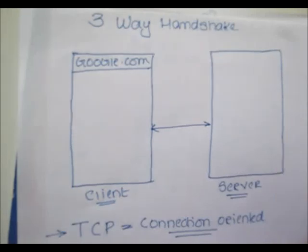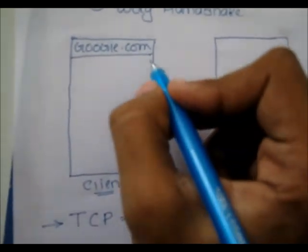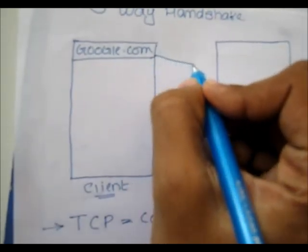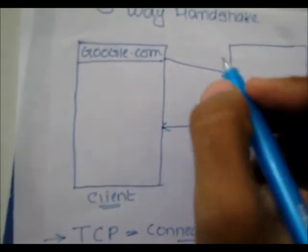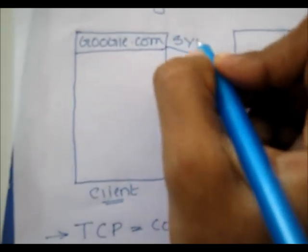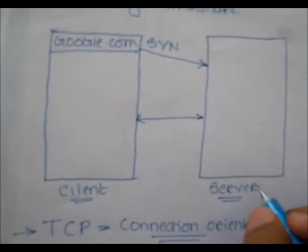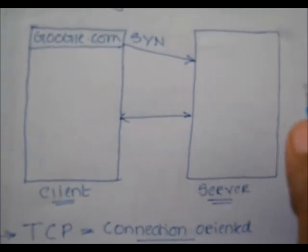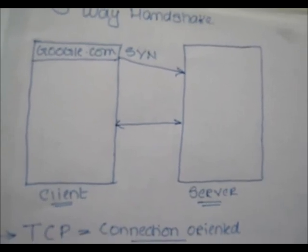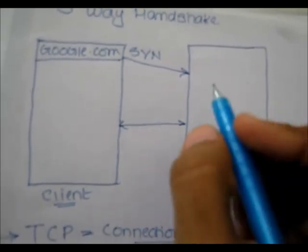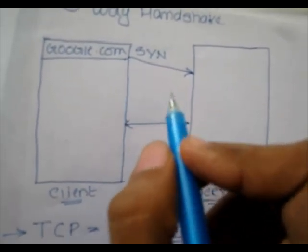Suppose you type google.com into your web browser. What will happen first is that your machine will send a SYN packet to the server of Google. The SYN packet basically consists of a sequence number which tells the server how to connect back to the client.